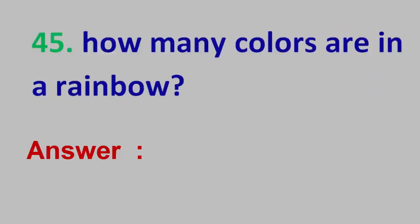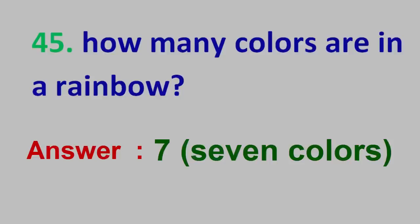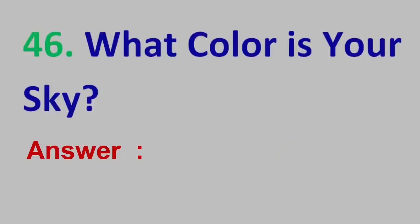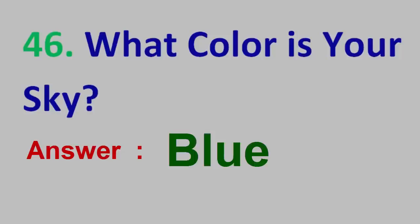Question No. 45: How many colors are in a rainbow? Answer: 7 colors. Question No. 46: What color is the sky? Answer: Blue.